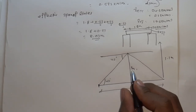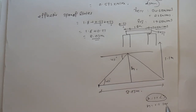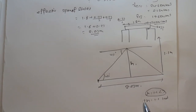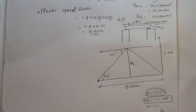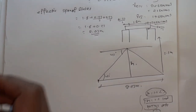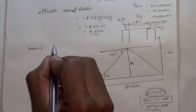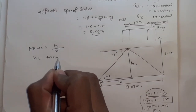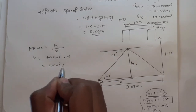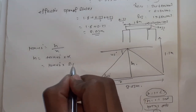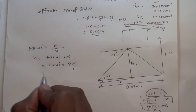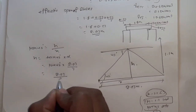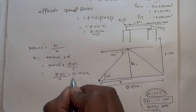Since the height above the lintel (1.1 m) is greater than half the effective span, we use half the effective span for the triangular load height. Half the effective span is 2.03 divided by 2, giving 1.015 meters as the height for the maximum load at center.